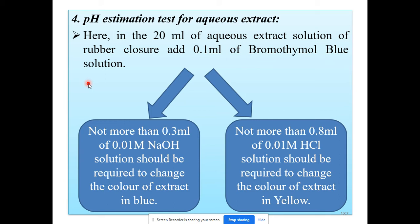After the process of autoclaving, we obtain two types of samples: the aqueous extract of the rubber closure and the sampled rubber closure. The pH estimation test is carried out on the aqueous extract of the rubber closure. In this test, take 20 ml of the aqueous extract solution of the rubber closure and add 0.1 ml of bromothymol blue solution as an indicator.